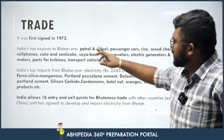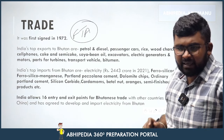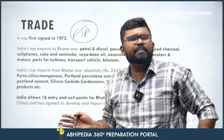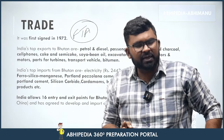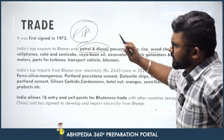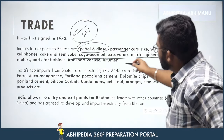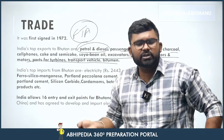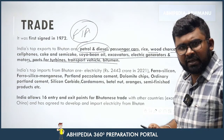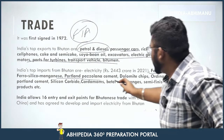The first Free Trade Agreement between India and Bhutan was signed in 1972. Bhutan is almost completely dependent on India for trade. India's top exports to Bhutan include petrol and diesel, passenger cars, rice, and wood. Petrol and diesel is the number one export. Other exports include primary and raw materials that enable Bhutan's economy — items like ferrosilicon, ferrosilicomanganese, and Portland Pozzolana cement.